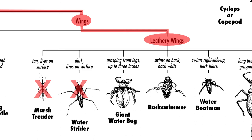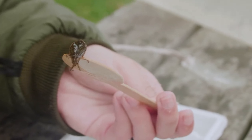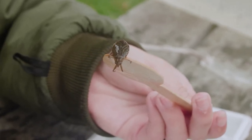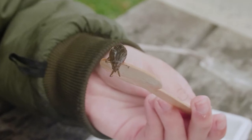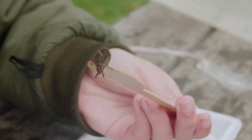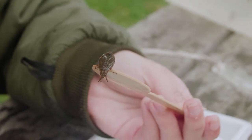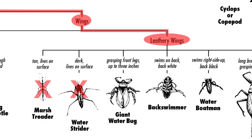Next, we have the giant water bug, and it says grasping front legs and it can be up to three inches. Let's see those front legs — are they grasping? I'd say yes. So out of our list, which one is it? Yep, it's a giant water bug. Now that we have gone through the steps, it's time for you to go through it and see what you can find.